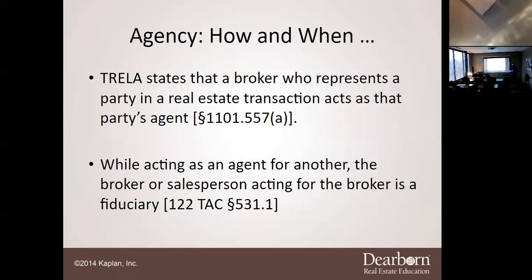As a fiduciary, you cannot put your interest in front of your client's — your interest must go behind theirs. For example, if you and your client both want to buy Miss Davenport's property, and you know your client's approval amount of $250,000, you cannot use that information to outbid your own client. You can never put your interest in front of theirs.